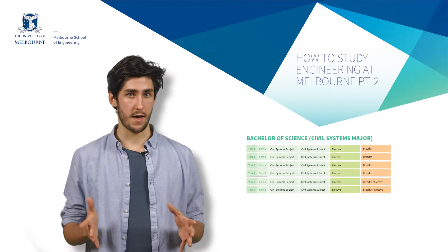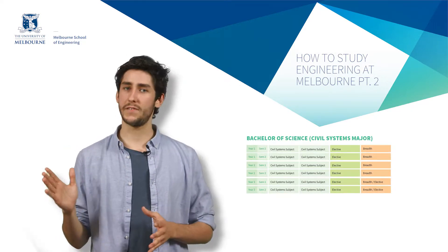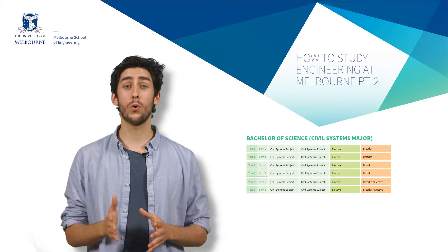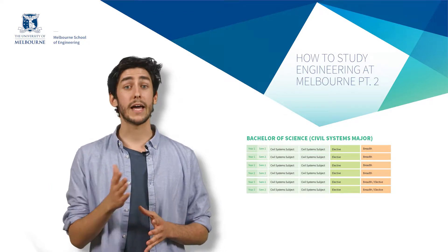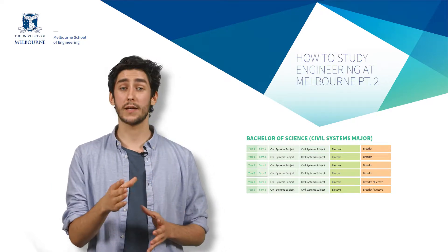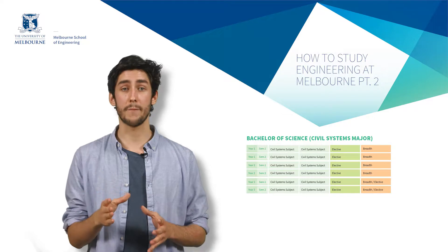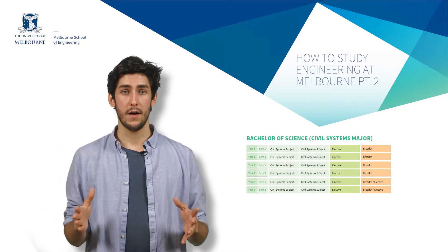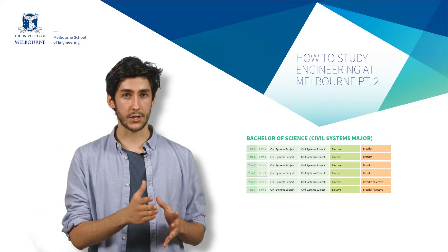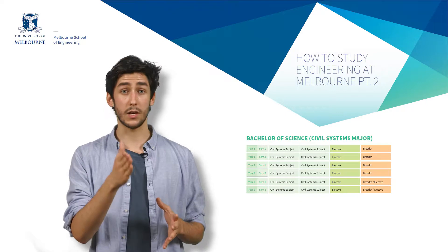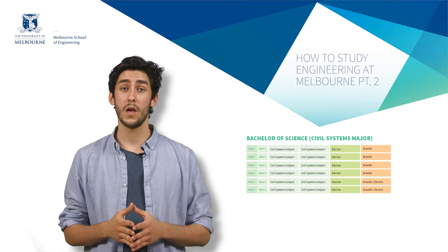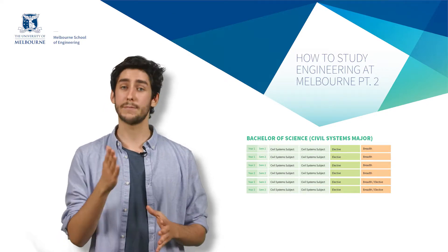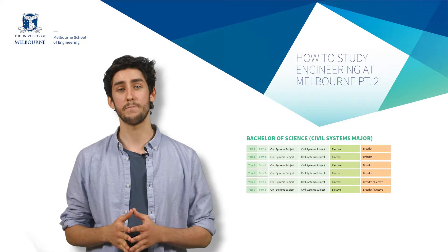As you can see here, the Bachelor of Science is made up of 24 different subjects. You take four subjects per semester over three years. The major is the specialisation you take in your degree. You take two subjects per semester as part of your major.